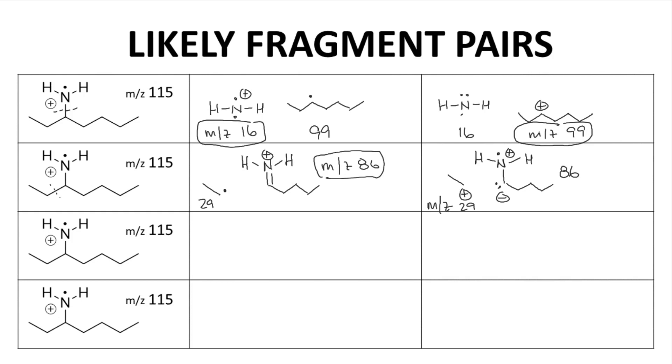For bond C, we could get this cation fragment with an Mz of 58, as well as this radical fragment which is neutral, has a mass of 57.